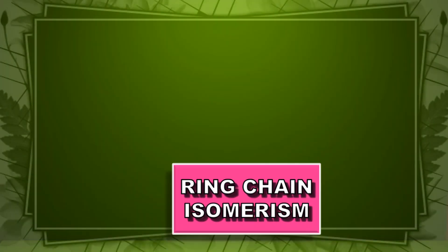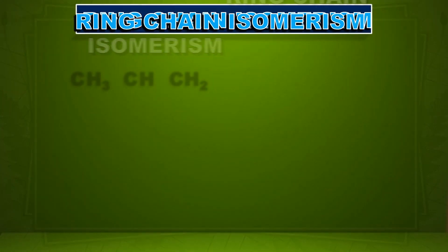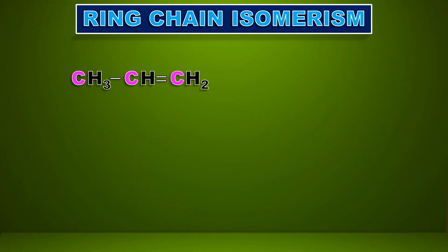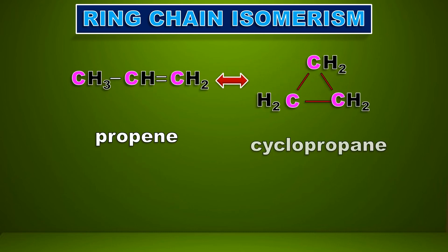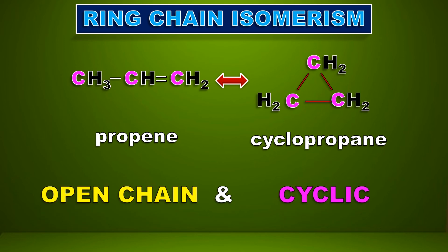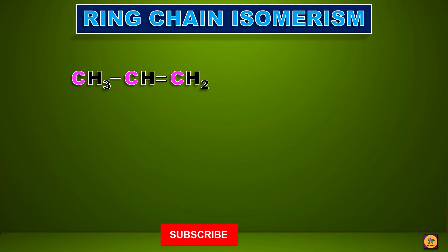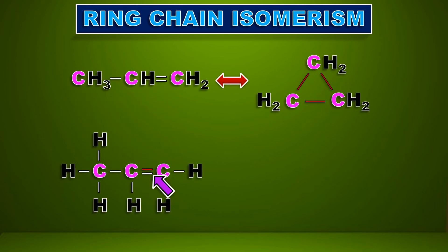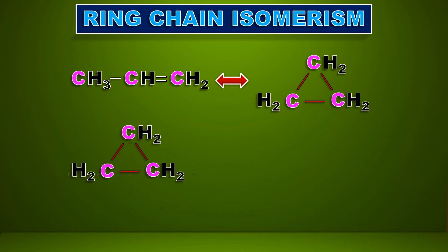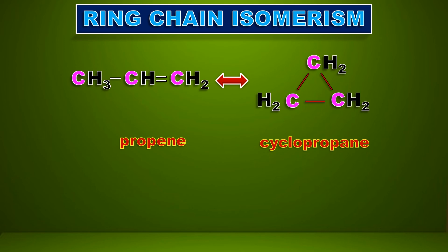The next one is quite interesting — that is ring-chain isomerism. Let us take this example: propene, an open chain compound, gets converted into the closed chain cyclopropane. The isomerism exists between an open chain and a cyclic compound. The double bond breaks and the hydrogen atom gets connected to the second carbon, and the first and third carbons get connected. We get a cyclic system — propene gets converted into cyclopropane. This is ring-chain isomerism.